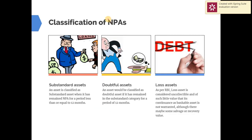NPA is a broad umbrella term and is classified into three categories. Even after 90 days, if there is no interest payment for another 12 months, it is called a substandard asset. If payment is still not received for the next 12 months after that, it becomes a doubtful asset. Further, if the bank is assured the loan will never be repaid, it is categorized as a loss asset.